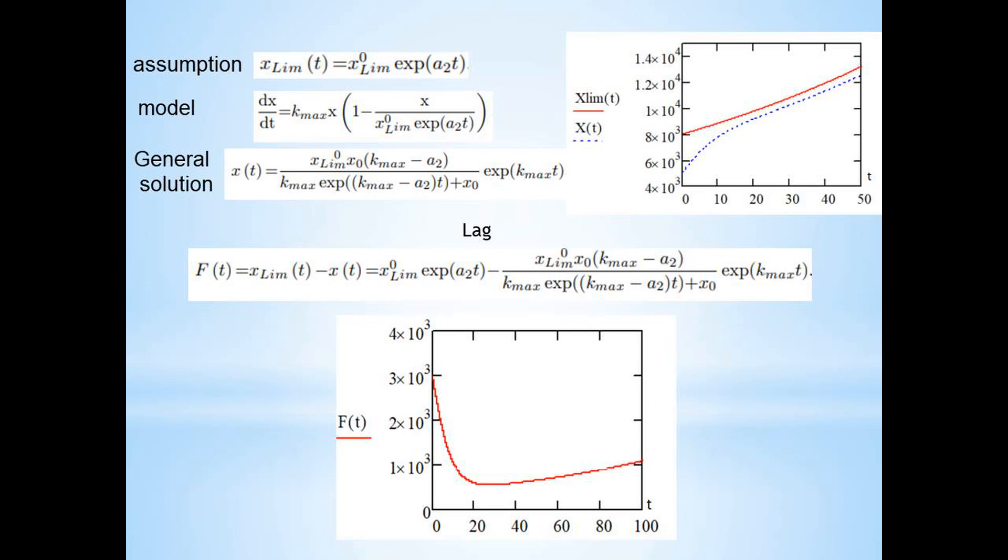The dynamics of the results of production activities for given model values of parameters and initial conditions is shown in the figure. That is, an increase in the allowable production threshold is accompanied by a corresponding increase in production. At the same time, at each moment of time there is some lag.